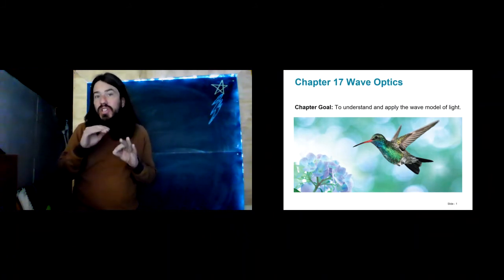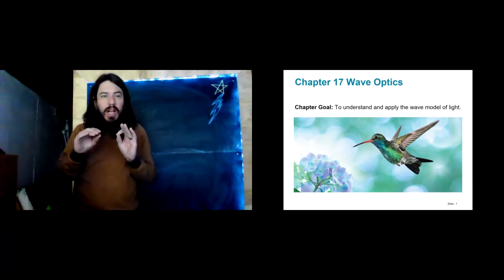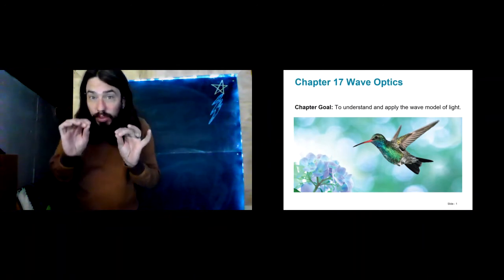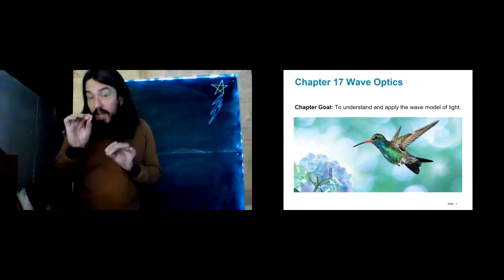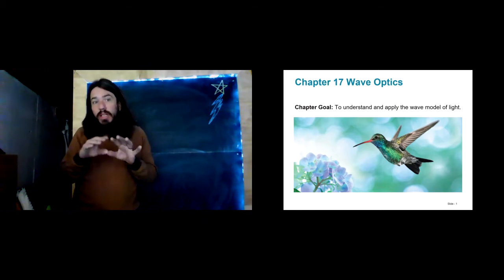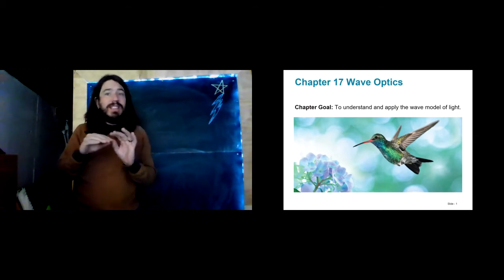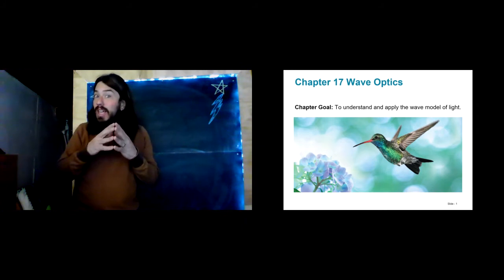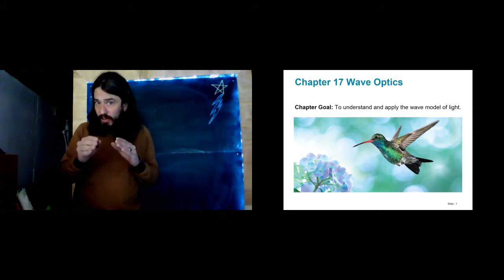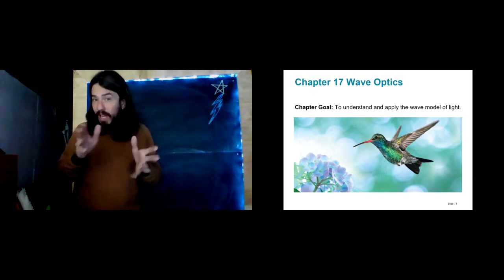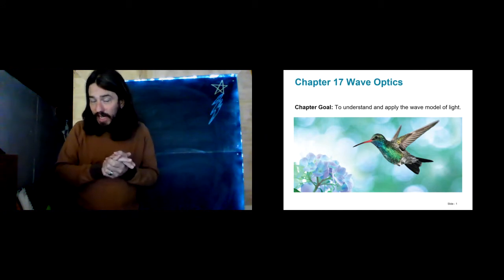At the end of the last chapter — I guess it was two chapters ago — we just touched briefly on the photon model of light, where we treated light exactly as a particle. Now we're going to dive a little bit more into the wave-like nature of light.